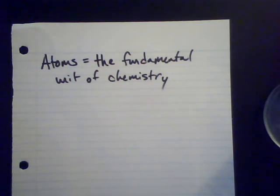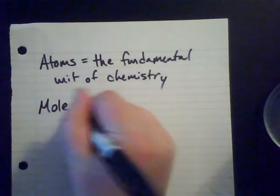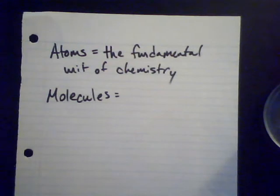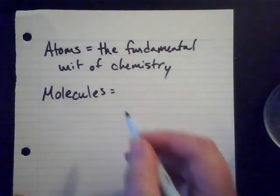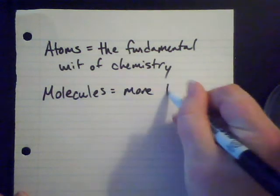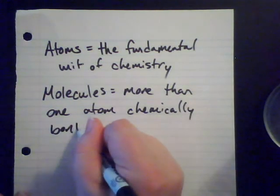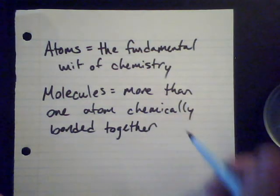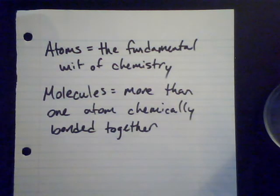We're looking at the study of the structure and behavior of matter as chemists, and atoms are our fundamental units to do that. Another term from John Dalton is the idea of a molecule. That last tenet of atomic theory says we can put atoms together in simple whole number ratios — when we put together more than one atom and chemically bond them together, we have a molecule. So now we have two definitions for the fundamental units and structure of matter.